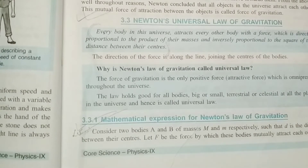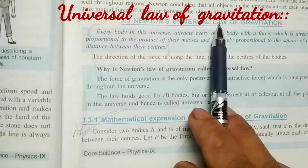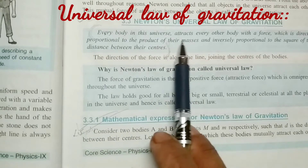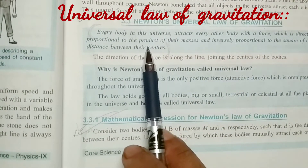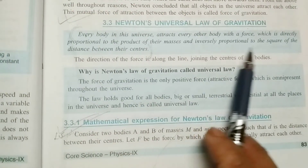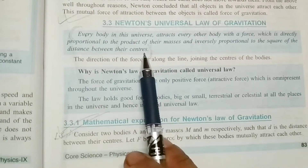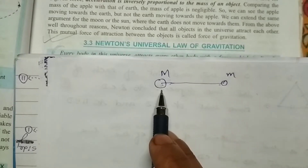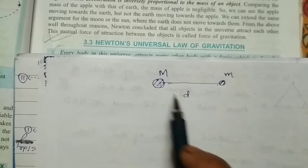Based on many experiments, Newton ultimately gave one law which is called the law of gravitation. According to this law, every body in the universe attracts every other body with a force which is directly proportional to the product of their masses and inversely proportional to the square of the distance between their centers. Suppose you have two objects — one of mass capital M and another of mass small m — and the distance between them is d.